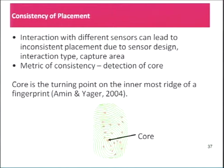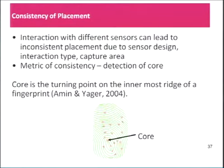In order to further drill down and see what else was going on with these data sets, a consistency of placement measure was created. The interaction with different sensors can lead to inconsistent placement, so we decided to look at a metric: if a core is detected in a pair of fingerprints, then that pair is said to be consistently placed. The core is defined as the point on the innermost ridge of the fingerprint, or the point on the fingerprint ridge with the maximum curvature — these are two commonly used definitions.